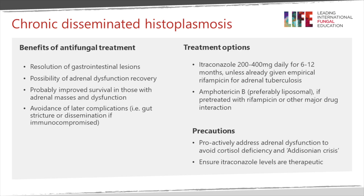In chronic disseminated histoplasmosis, the benefits of antifungal therapy include resolution of gastrointestinal lesions. Patients with adrenal dysfunction may get some recovery of adrenal gland function, and therapy probably improves survival in those with adrenal gland dysfunction and masses — which may be unilateral or bilateral. It also avoids later complications, such as gut stricture or subsequent dissemination if patients become immunosuppressed.